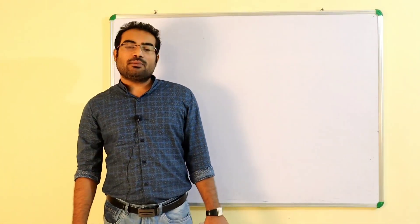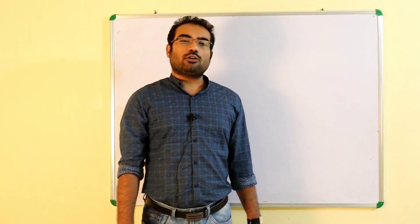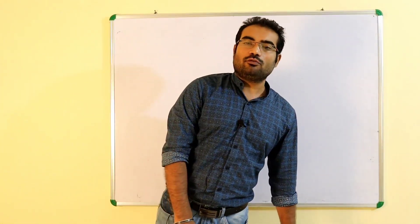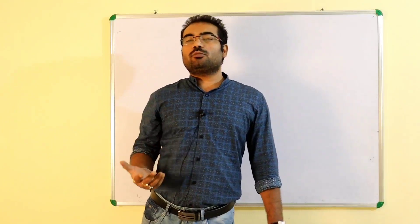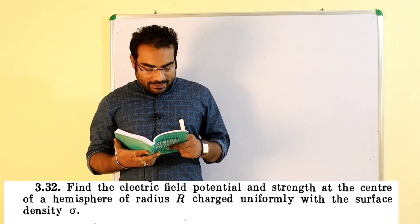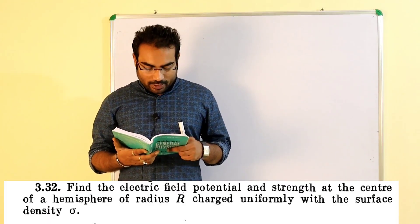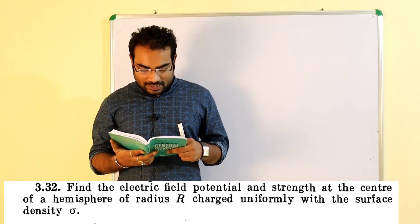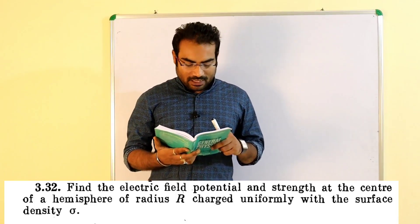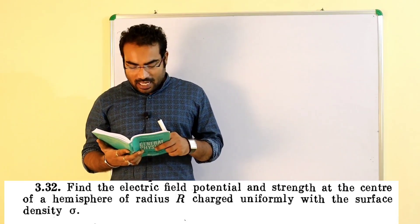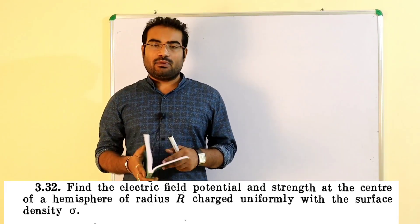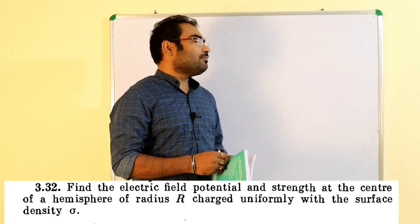Hello everyone. In this video I am going to discuss question number 32 of I. Rudu. The question asks us to find the electric field potential and strength at the center of a hemisphere of radius R, charged uniformly with surface charge density sigma.